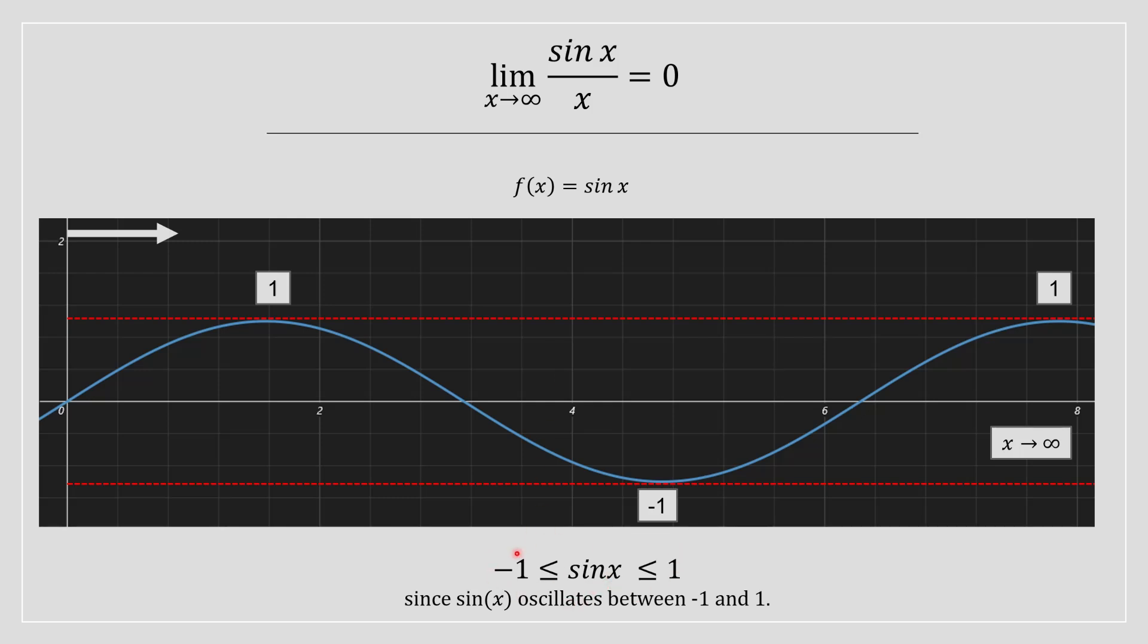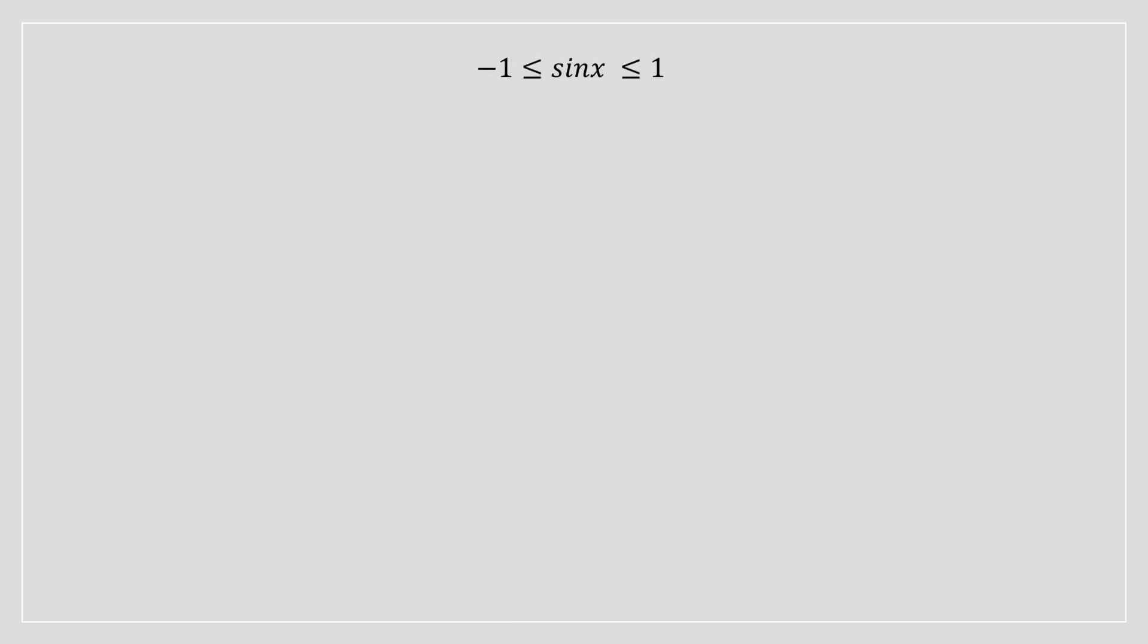Therefore, we're going to use this and build off this inequality over here. And we're going to be applying the squeeze theorem as a result. So we can divide every side of this inequality by x, because the goal is to find sin x divided by x. We are then going to apply the limit on each side of this inequality.